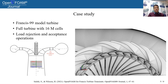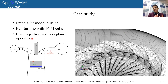As a case study we looked at the Francis 99 model turbine. On the left picture you can see a cross-section of this turbine. The full turbine computational mesh contains 16 million cells, a close view of which is shown on the right picture. We studied both load rejection and load acceptance operations.